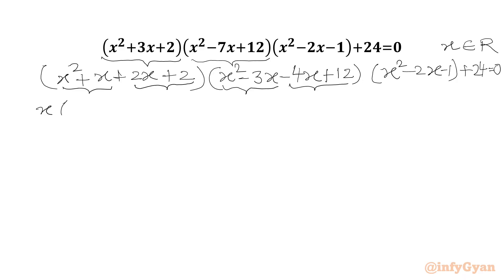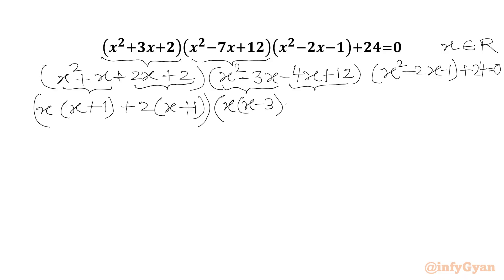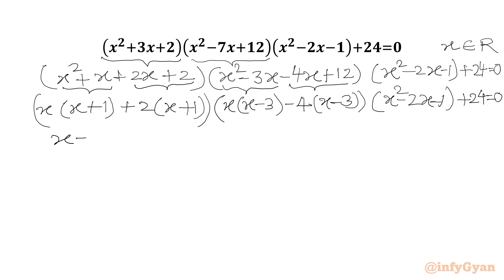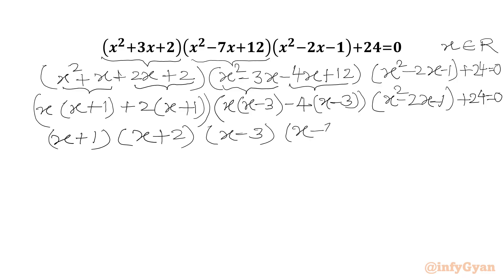We get x(x+1) + 2(x+1) from the first bracket, and x(x-3) - 4(x-3) from the second. This gives us the fully factored form: (x+1)(x+2)(x-3)(x-4)(x²-2x-1) + 24 = 0.